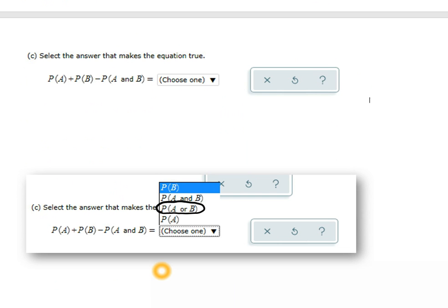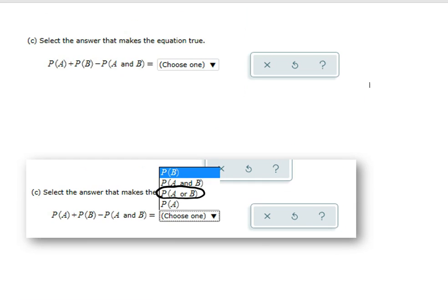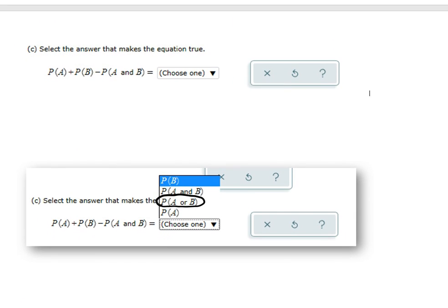So whenever you add two probabilities together and then you subtract out what they call the intersection, what they overlap with, then you get the probability of one or the other. It always works that way. So I hope that helped explain that a little better.